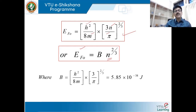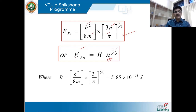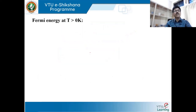This equation clearly shows that more electrons per unit volume means higher Fermi energy. For example, copper has 8.45 × 10^28 electrons and a Fermi energy of approximately 7 electron volts. Aluminium has more electrons and thus a higher Fermi energy. The Fermi energy entirely depends on the total number of electrons present per unit volume of the material.